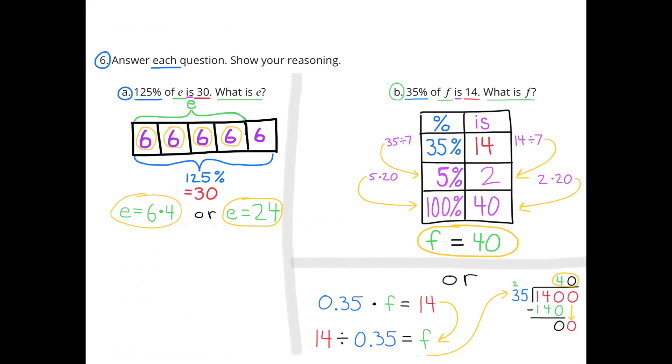I know that 100% has 4 groups of 25%. So 125% would be 5 groups of 25%. And since it equals 30, and 30 divided by 5 is 6, I placed a 6 inside each of the boxes.